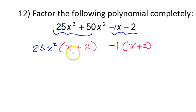Now, because I have these parentheses the same, the x plus 2 is a GCF itself. So I will, again, pull out the GCF in this way. If I take away the x plus 2, that leaves behind the blue 25x squared minus 1.